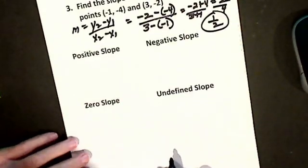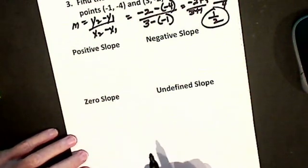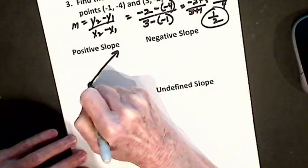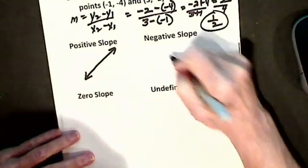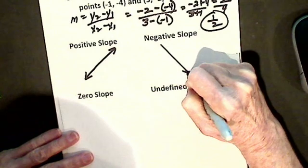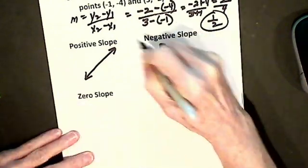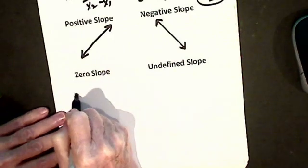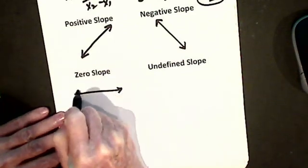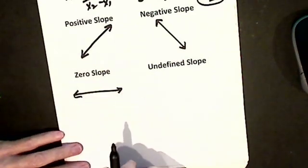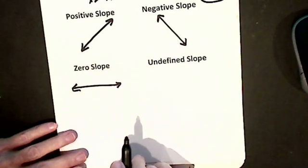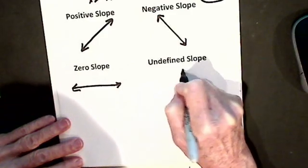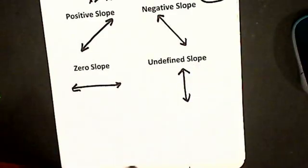One more thing. Positive slope—we talk about a positive slope—looks like this. We go from left to right. Negative slope looks like this. We go from left to right. Zero slope is a horizontal line. Undefined slope is a vertical line.